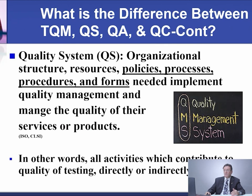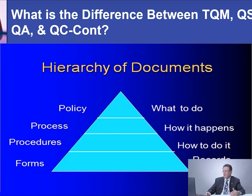Quality system, on the other hand, is the organizational structure, resources, policies, processes, procedures, and forms needed to implement quality management and manage the quality of the services or products of the laboratory. In other words, all activities which contribute to quality of testing directly or indirectly. What do we mean by policy, process, procedures, and form?